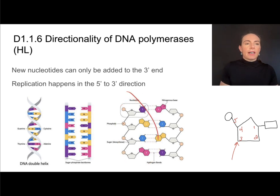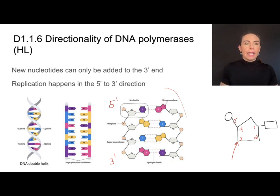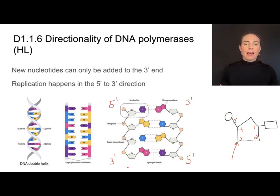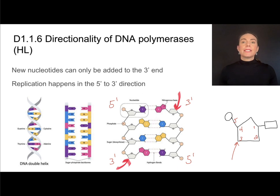On this strand, the 5-prime end is up here and the 3-prime end is at the bottom — the bottom of the house, as I like to think of it. The other strand is anti-parallel, meaning it runs in the opposite direction, so the 3-prime end is up here and the 5-prime end is down here. New nucleotides can only be added to the 3-prime end, so on this strand we can add nucleotides down here, and on the other strand we can add them up here. No nucleotides can be added to the 5-prime end, so we say replication happens in the 5-prime to 3-prime direction.